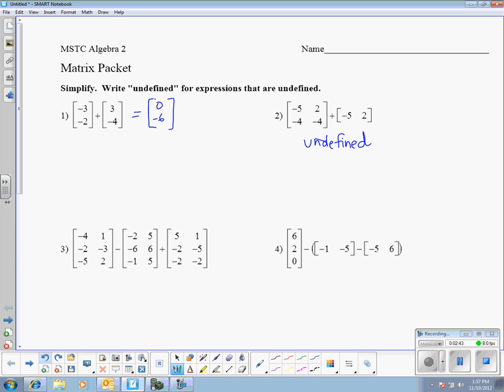And then let's look at number three before we move on to a different topic. Any time you subtract a matrix, this negative sign applies to every term in the matrix. So what I have is negative four minus negative two. So that's a plus two. And then plus five. So negative four plus two plus five is three. At each point, make sure that this negative distributes to all six parts in that matrix. That's how you subtract a matrix.